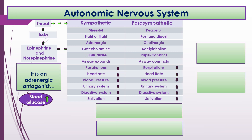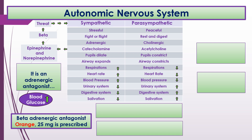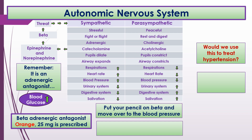Let's apply what we know to medication administration. Say a provider prescribes a beta adrenergic antagonist orange 25 milligrams. We've never heard of this medication, but we know an antagonist blocks the beta adrenergic system. Put your pencil on beta or adrenergic and move to blood pressure — the blood pressure goes down. So yes, we would use this medication to treat hypertension.